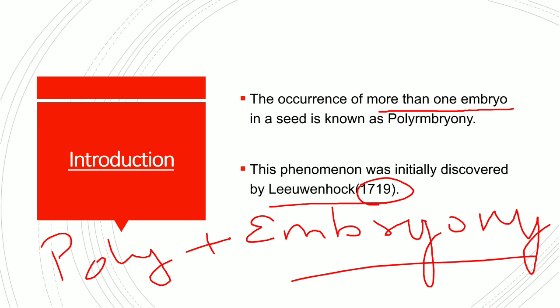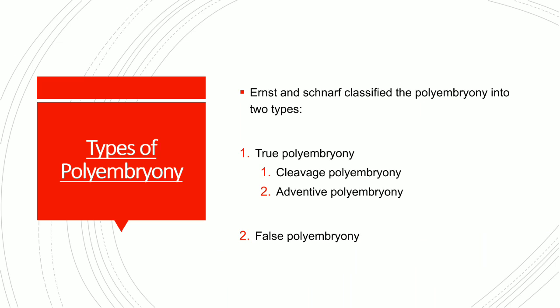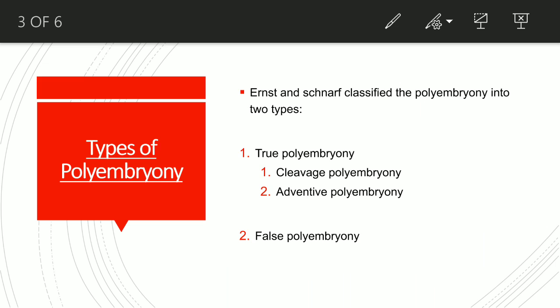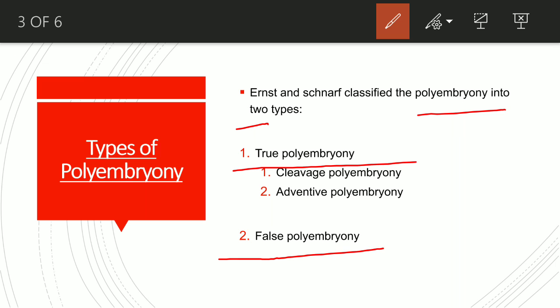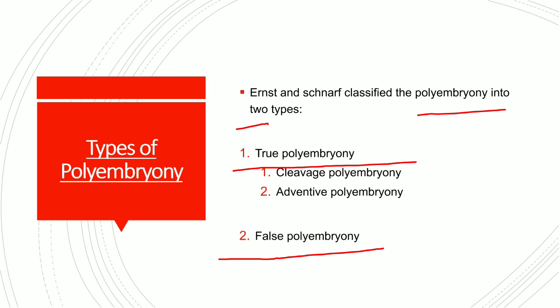Now, what are the types of polyembryony? Ernest and Snaff classified polyembryony into two types: the first one is true polyembryony and the second one is false polyembryony.